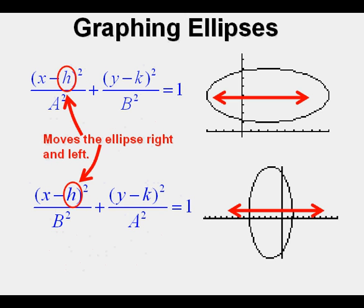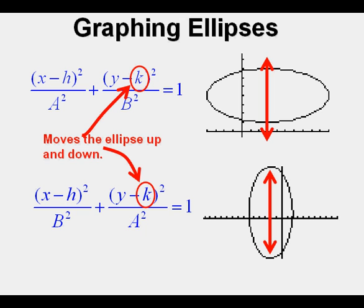For each type of ellipse, it's the h value that moves the ellipse right and left on the coordinate plane. x minus a number moves the ellipse to the right, and x plus a number moves the ellipse to the left. And it's the k value that moves the ellipse up and down on the coordinate plane. y minus a number moves the ellipse upward, and y plus a number moves the ellipse downward.